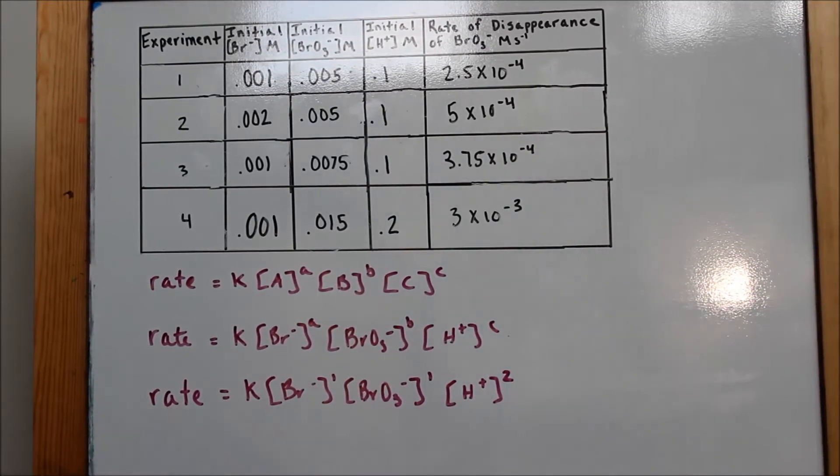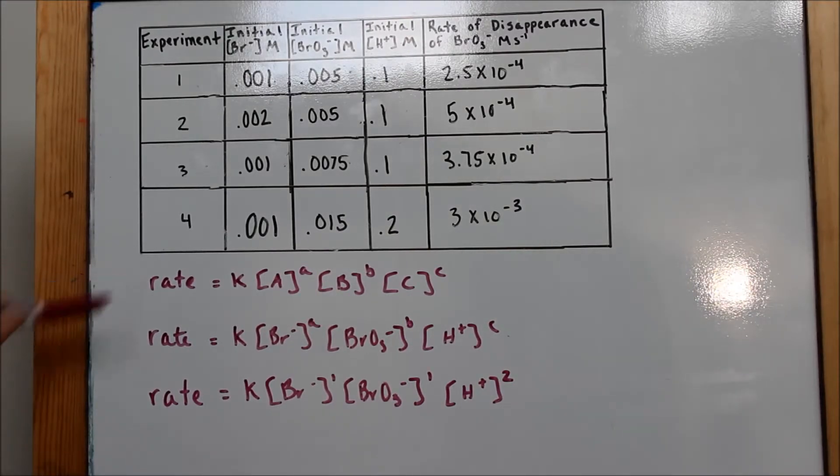Part B, write the rate law for the overall reaction. The generic rate law equation is given here. The modified rate law equation for this specific problem, with the reactants substituted, is given here. We will substitute the orders found in Part A for lowercase a, b, and c to find the rate law for the overall reaction.